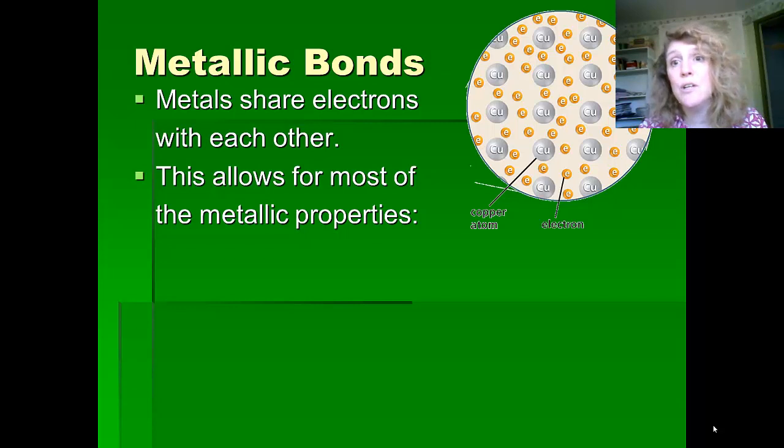So if you can see in this picture here, you can see that there's copper in the middle, and all of the outside electrons in the copper don't just belong to this one copper. They're kind of shared among all of the copper.